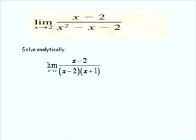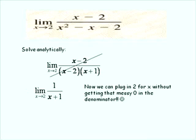Analytically solving this limit: if we factor the denominator, we have x minus 2 in the numerator, and in the denominator the factors x minus 2 times x plus 1. We can cancel out the common factors of x minus 2, leaving us with the limit as x approaches 2 of 1 over x plus 1. Now we can plug in 2 for x without getting a 0 in the denominator. Therefore, when we plug 2 in for x, we find that this limit equals one-third.